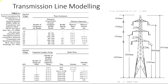In eTAP, you have two options: you can enter the passive values R, X, and B directly into the software, or you can enter the physical parameters — the tower geometry, conductor data, and ground wire data — and eTAP will automatically calculate the R, X, and B values for you. It totally depends on what data you have available.